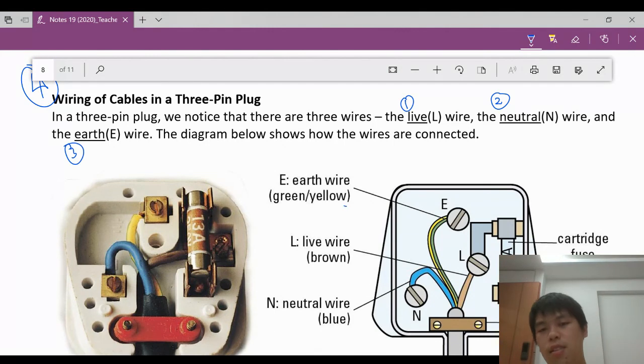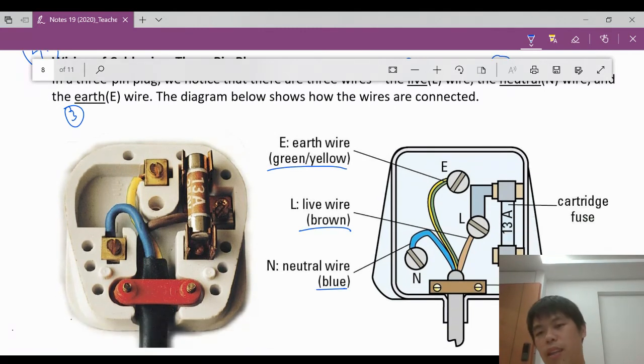You need to know their colors. Earth is green and yellow like the grass. That's why it's called earth. Brown because it's closer to red, slightly more dangerous. And blue, which is the neutral wire. You must know how they connect. Live is here. Why here? Because it's connected to the fuse. If your current from the live is too large, your fuse will melt. It will protect everybody and the devices.